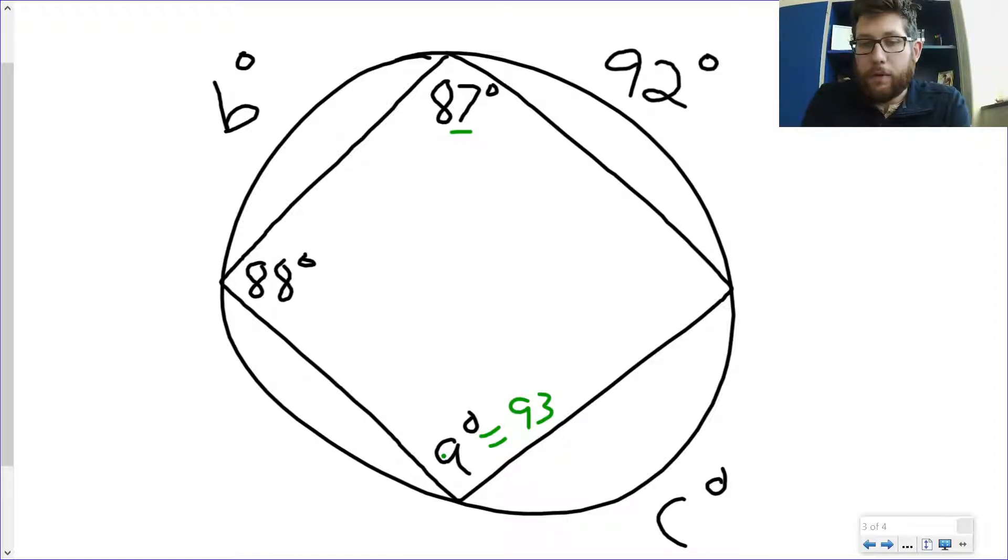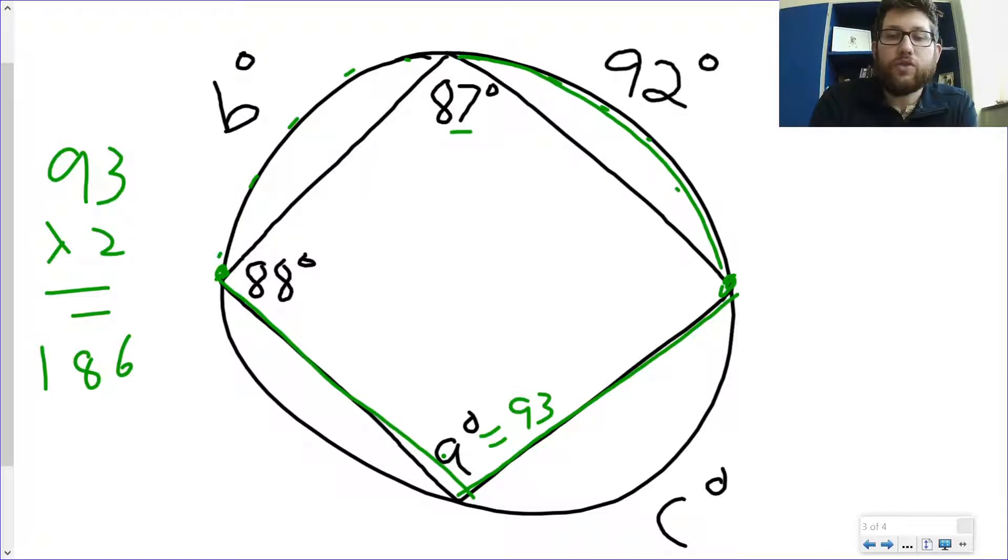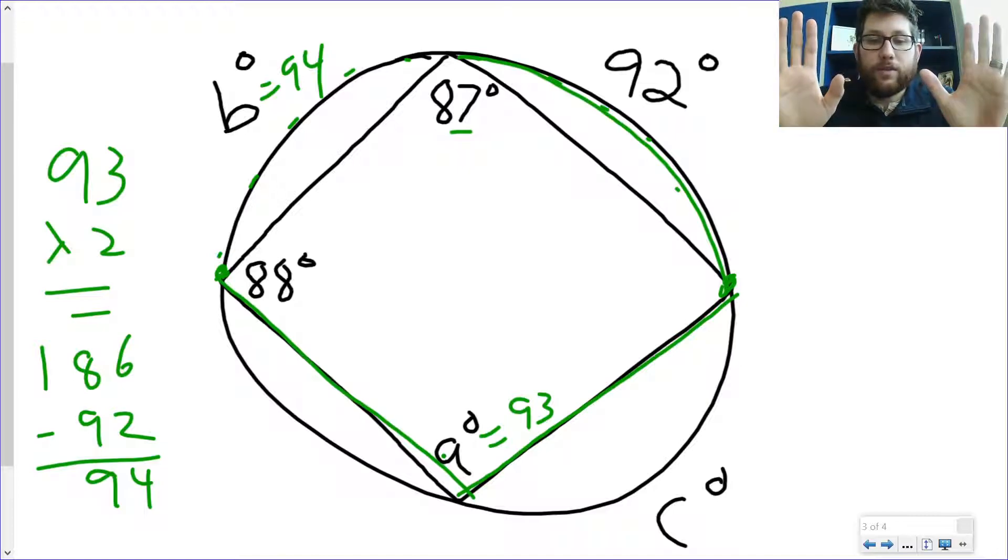All right, hopefully we're okay with that. Now let's look at a as an inscribed angle. I know that this entire distance is 2 times a. That would get me from this point here all the way around to this point over here. So 93 times 2 is equal to 186. So the whole thing is 186, but I know this piece here is 92. So I subtract 92, and I get 94.